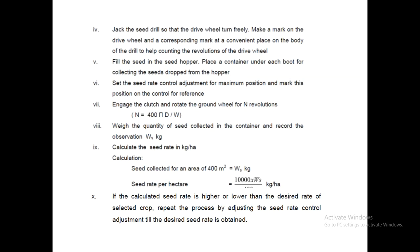For example, if n is 100, rotate the wheel 100 times in the jacked-up condition. The seeds that fall through the seed tube are collected in the container and weighed as ws kg. This means for 1/25 hectare (400 m²), ws kg of seed is delivered. For 1 hectare, the total weight can then be easily calculated. If the calculated seed rate is above or below the standard values specified by the manufacturer, repeat the process by adjusting the seed rate control. This completes the calibration process for a seed drill.